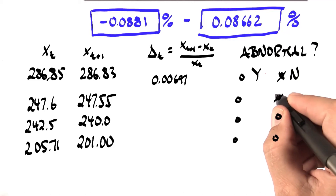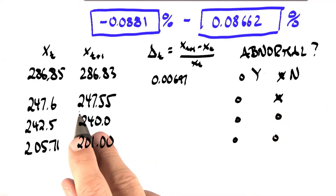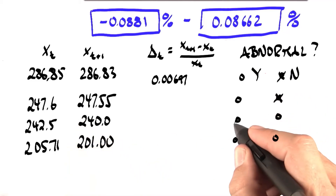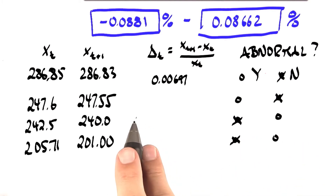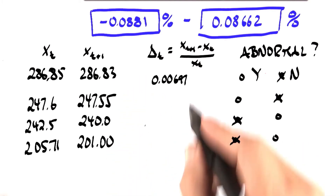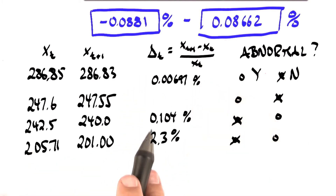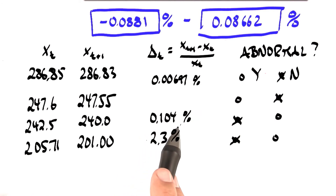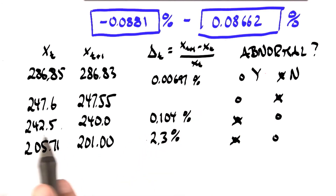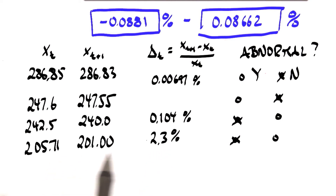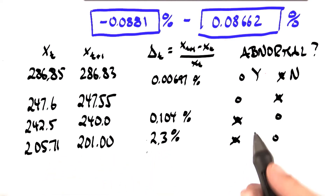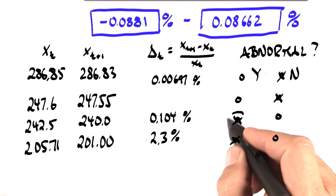It turns out the first one is still okay, but the last two would have been abnormal. The reason is when you work out the delta t in percent, you'll find that this one over here is a 0.14% change, which is too much for a single trade. And this one is an amazing 2.3% change within a single trade. Those clearly trigger the abnormality behavior.